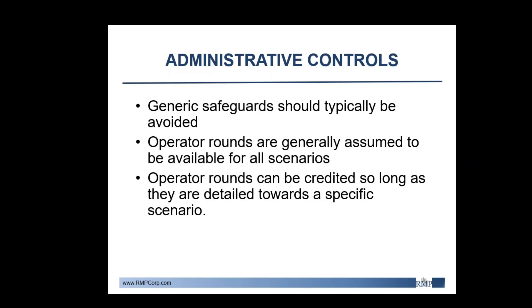Moving on to administrative controls — these are generic safeguards which should typically be avoided. However, operator rounds are generally assumed to be available for all scenarios and can be credited so long as they are detailed towards a specific scenario. For example, tube inspections conducted every turnaround to check for any potential tube leaks. Another example may be operator rounds that include testing for contamination — so if you had a tube leak into your cooling water tower, you would want to check for hydrocarbons in your cooling water to prevent any possible fire hazards.